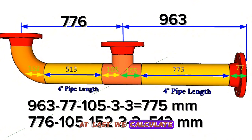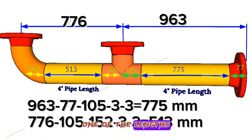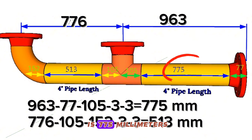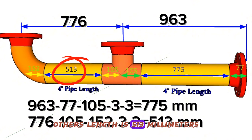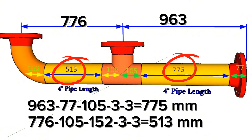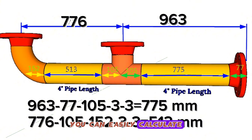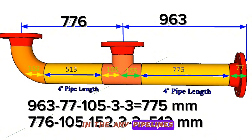We have calculated and found the lengths of the yellow colored pipe pieces: one length is 775 millimeters and the other is 513 millimeters. By using this method, you can easily calculate the lengths of pipe pieces in any pipeline.